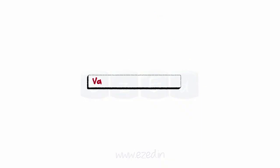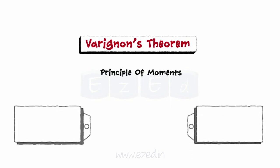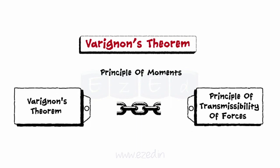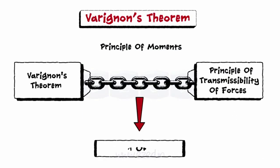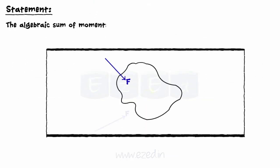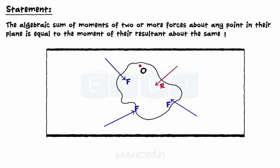We will now learn about the principle of moments, also known as Varagnon's theorem. It is a very important principle often used in conjunction with the principle of transmissibility of forces in order to solve systems of forces acting upon and within a structure. It states that the algebraic sum of moments of two or more forces about any point in their plane is equal to the moment of their resultant about the same point.